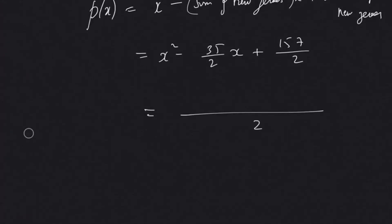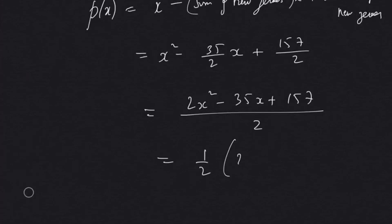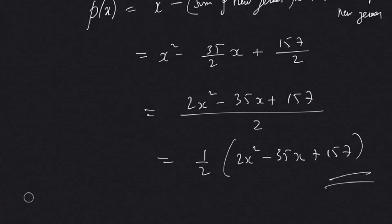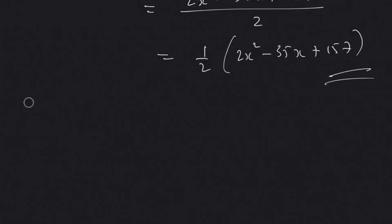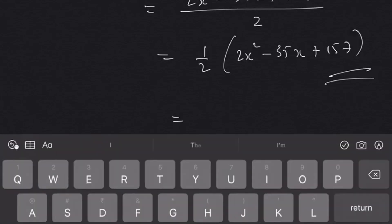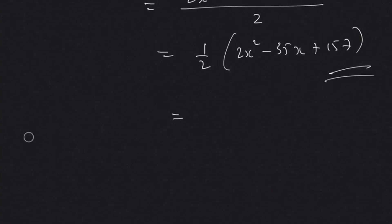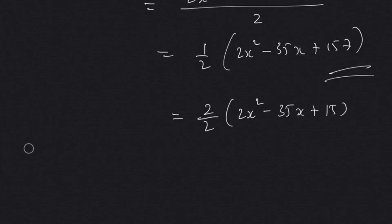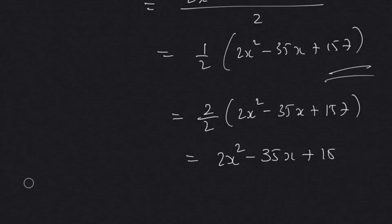Taking the LCM of 2, the new quadratic polynomial is: (1/2)(2x squared minus 35x plus 157). Taking 1 by 2 common, we can write this as 2x squared minus 35x plus 157. Since multiplying a quadratic polynomial by a real number does not change its zeros, the final polynomial is 2x squared minus 35x plus 157.